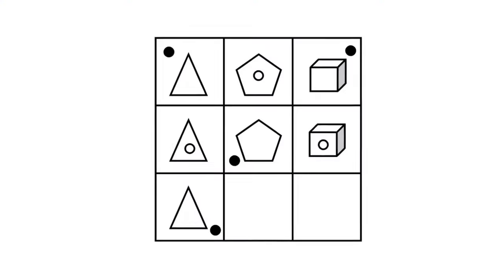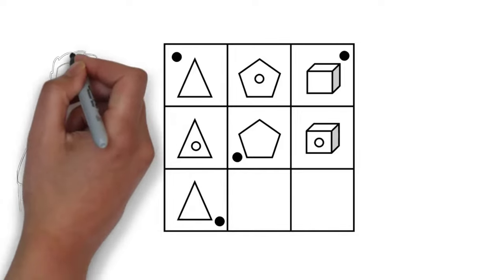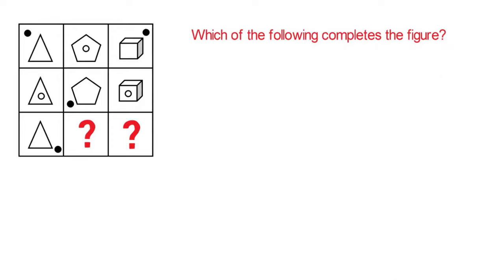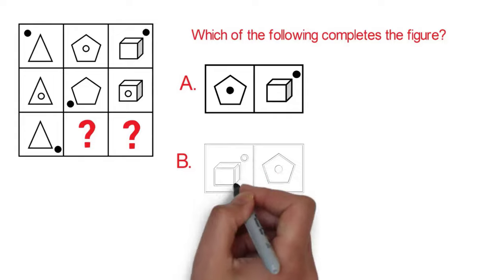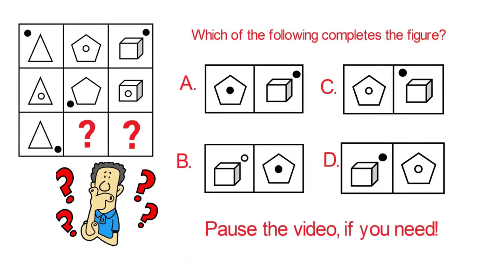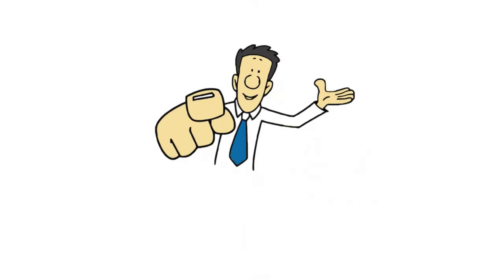There is a very high chance you'll see this type of question on the test. You're presented with a three-by-three matrix containing triangles, pentagons, and cubes. Two spaces are missing their shapes and you must select from choices A, B, C, and D. Give yourself 10 to 30 seconds.